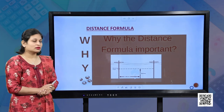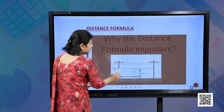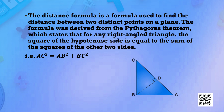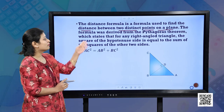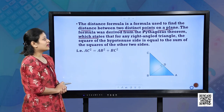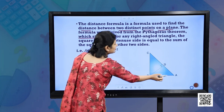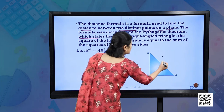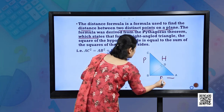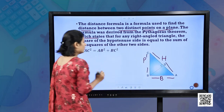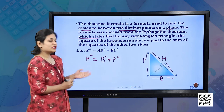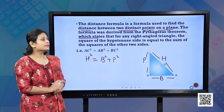Now, distance formula. The distance formula is used to find the distance between two distinct points on a plane. The formula was derived from the Pythagoras theorem, which states that for any right-angle triangle — if you consider triangle with AC as the hypotenuse, BC as the perpendicular, and AB as the base — then hypotenuse squared equals base squared plus perpendicular squared. This is the foundation used to derive the distance formula.